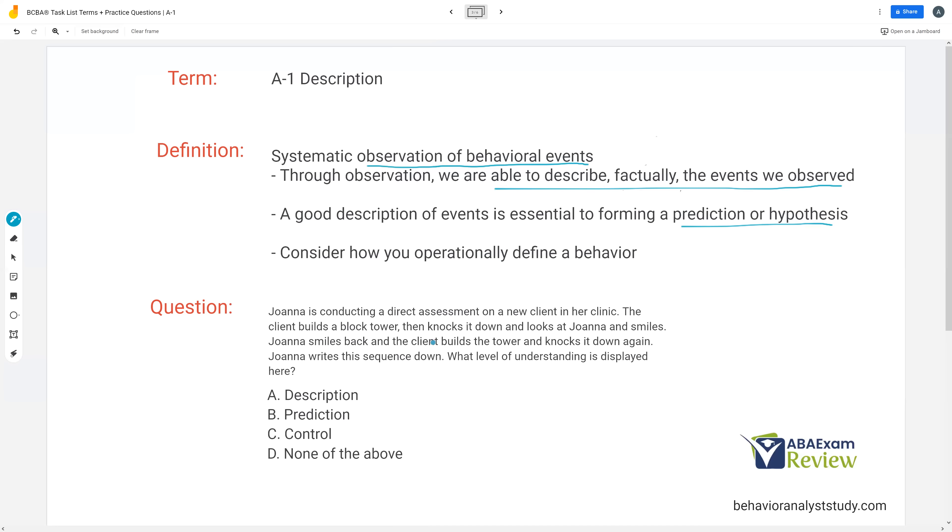Question. Joanna is conducting a direct assessment on a new client in her clinic. Client builds a block tower, then knocks it down, and looks at Joanna and smiles. Joanna smiles back, and the client builds a tower and knocks it down again. Joanna writes this sequence down. What level of understanding is displayed here?